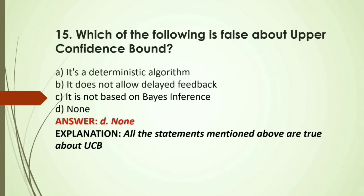MCQ: Which of the following is FALSE about upper confidence bound? A) It is a deterministic algorithm; B) It does not use feedback; C) It is not based on Bayes' indifference; D) None. Answer: D, none — all the statements mentioned are true about upper confidence bound.